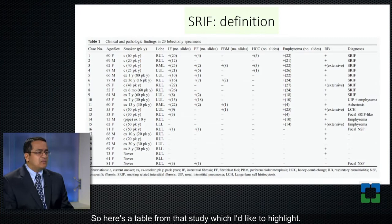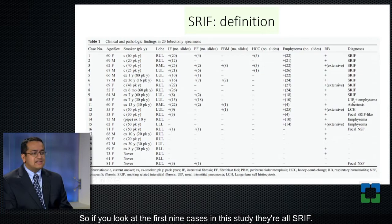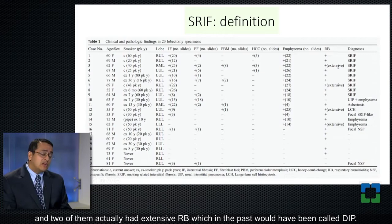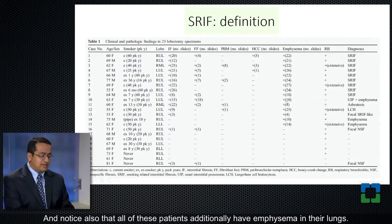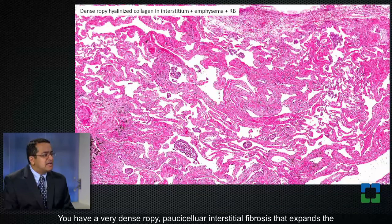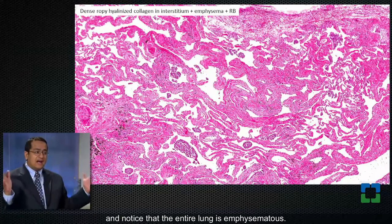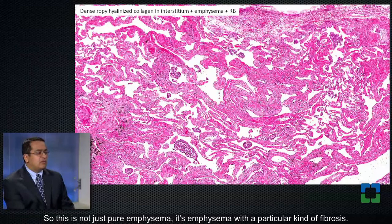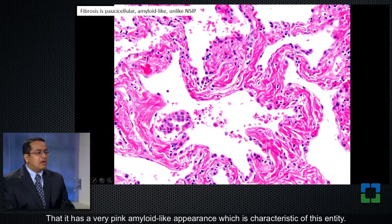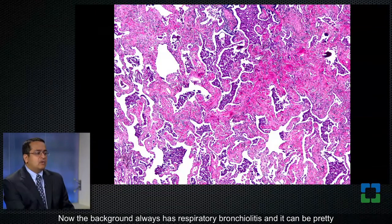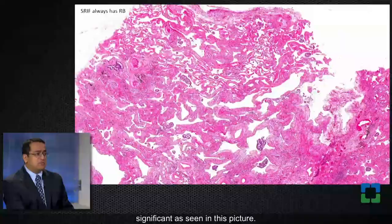Here's a table from that study I'd like to highlight. People often don't realize this: if you look at the first nine cases in this study, they're all SRIF. The final diagnosis in these patients is SRIF, but they all have respiratory bronchiolitis, and two of them actually had extensive RB, which in the past would have been called DIP. Notice also that all of these patients additionally have emphysema in their lungs. So here's what SRIF looks like pathologically: you have a very dense, ropey, paucicellular interstitial fibrosis that expands the alveolar septa, and in the background you see small areas of respiratory bronchiolitis. Notice that the entire lung is emphysematous. Here's the fibrosis at high magnification — it has a very pink, amyloid-like appearance, which is characteristic of this entity. And occasionally you have entrapped smooth muscle bundles mixed with this kind of fibrosis.